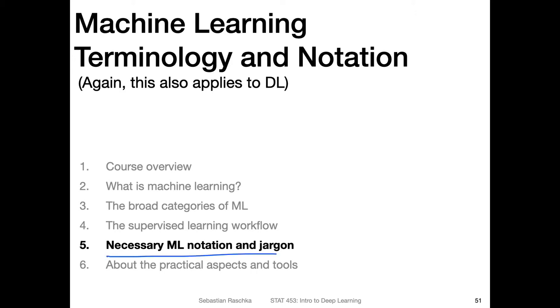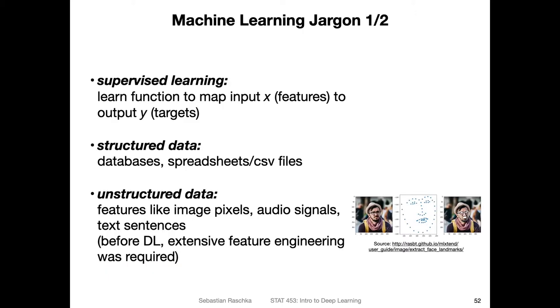Let me go over some of the necessary machine learning notation and jargon, something that we will be using in this class over and over again and that is also commonly used in the machine learning and deep learning communities. I'm revisiting the term supervised learning - it's about learning a function that maps some input x to some output y, where x are the features and y are the targets.